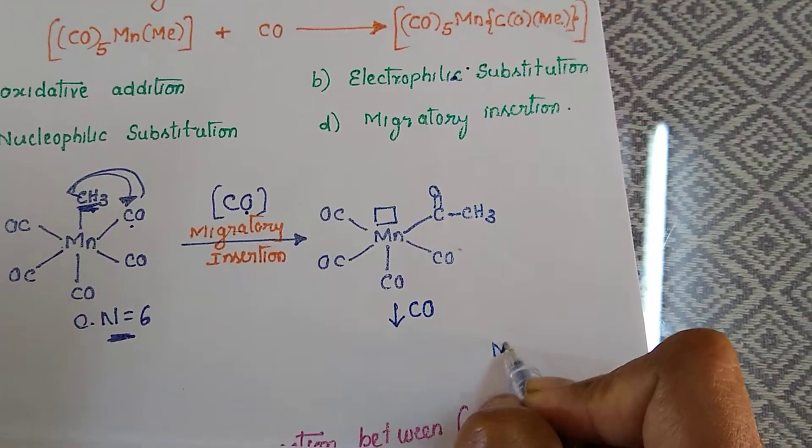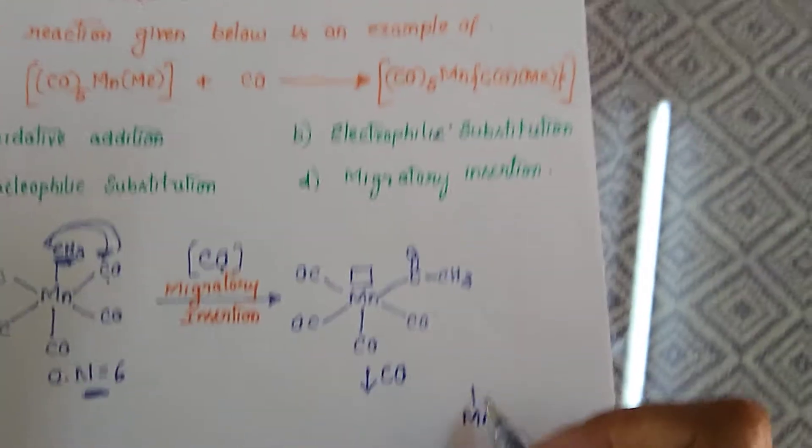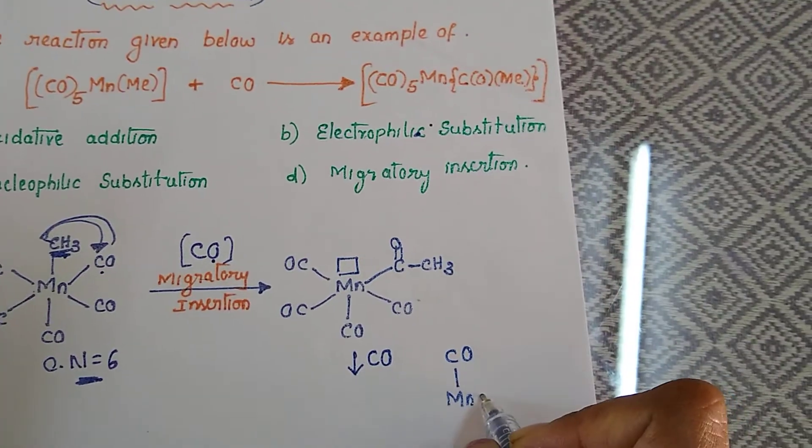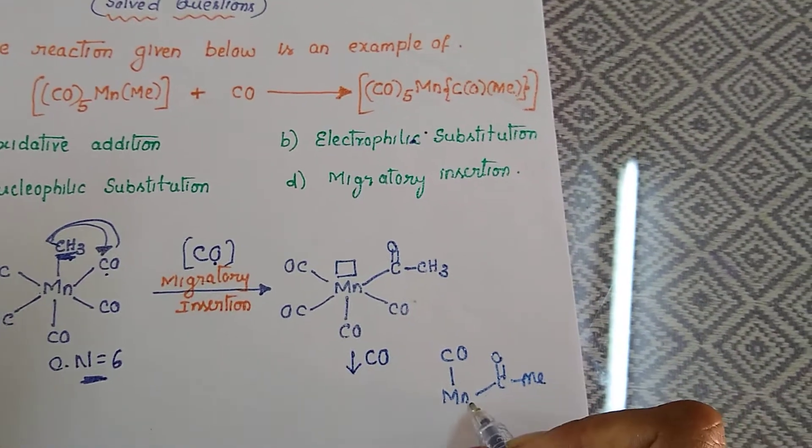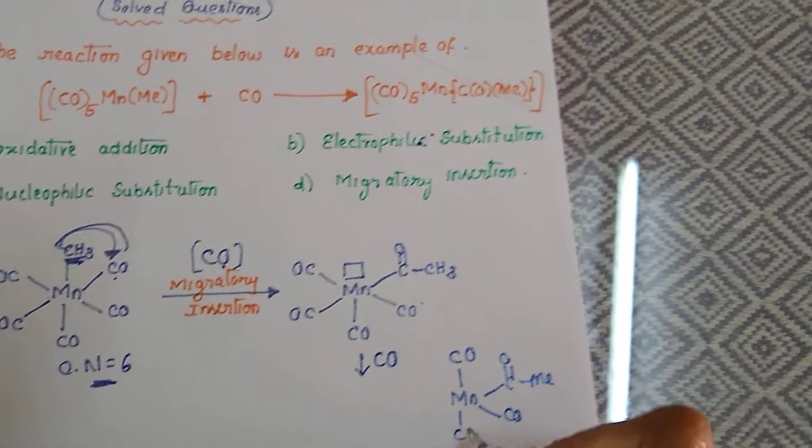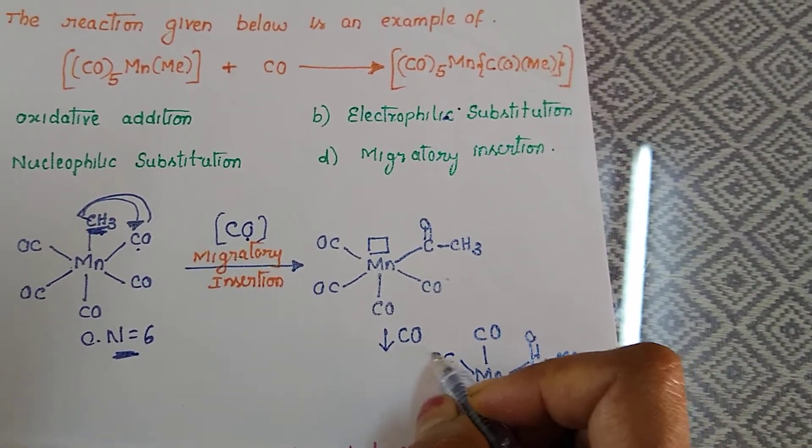So that vacant site can be filled easily with incoming carbonyl. That's why the product has the CO attacking directly to the manganese. The already existing CO is undergoing migration.